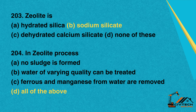Question 204: In the zeolite process. A. No sludge is formed. B. Water of varying quality can be treated. C. Ferrous and manganese from water are removed. D. All of the above. Correct option: D. All of the above.